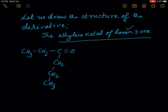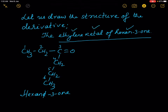This is hexane-3-one: one, two, three, four, five, six. We have to form the ethylene ketal of hexane-3-one.